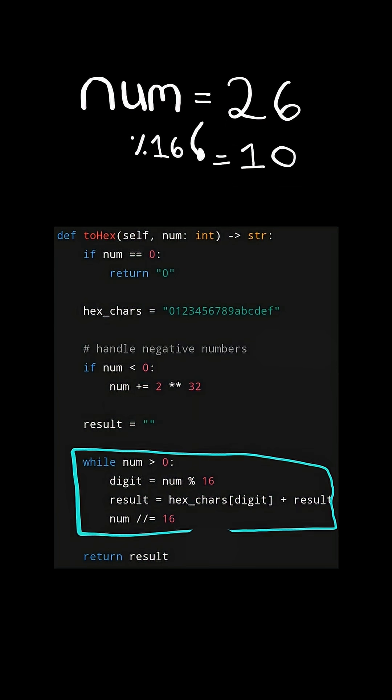And we mod the number by 16. We then use that number to index into the hexadecimal symbols string and prepend the symbol to the result. And finally, we divide the number by 16 and continue the process with the new number. We mod the new number by 16, use that number to index into the hexadecimal symbol string, and prepend the symbol to the result. And finally, we divide the number by 16.